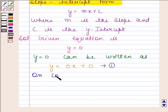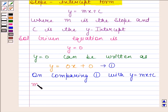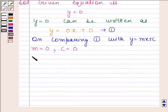Now, when comparing equation 1 with y equals mx plus c, we find that m equals 0 and c equals 0. Therefore, the slope is 0 of the given equation and the y-intercept is also 0.